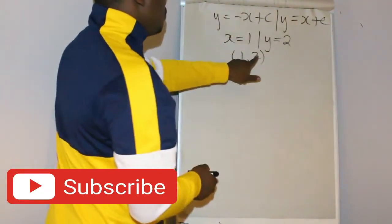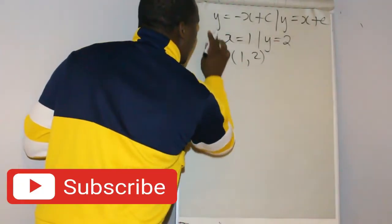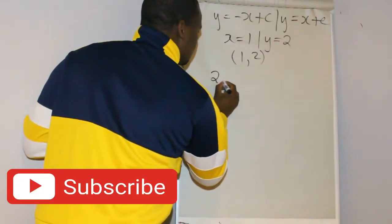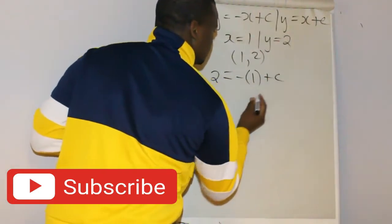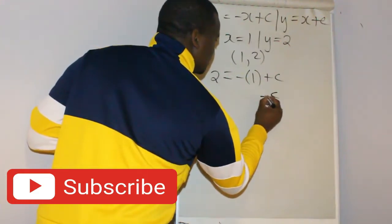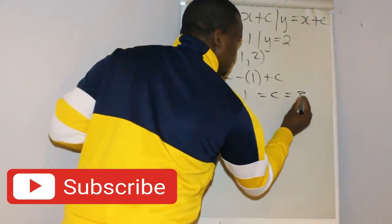Easy. We have x and y. So y equals negative x plus c, so 2 equals negative 1 plus c. Your c equals 2 plus 1 because you transpose this to this side. So your c equals 3.